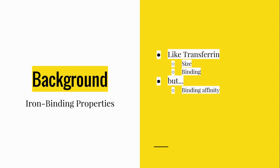Lactoferrin is part of the transferrin family and both are very similar proteins — both are glycoproteins, both have roughly the same size at 80 kDa, both are about 700 amino acid residues in length, and both bind two Fe³⁺ ions. However, they differ in binding affinity: lactoferrin binds iron about 300 times more strongly than transferrin does. This means lactoferrin holds on to iron at a more acidic pH — lactoferrin releases iron at about pH 3–4, while transferrin releases iron at about pH 5–6.